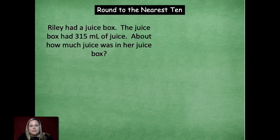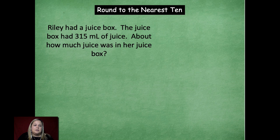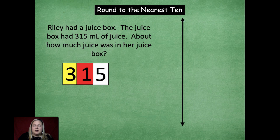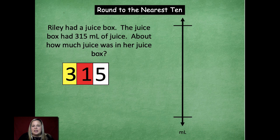Okay? So let's do another one. So Riley had a juice box. The juice box had three hundred fifteen milliliters of juice. About how much juice was in her juice box? So again, we have our three hundred fifteen. We're going to use our vertical number line. You have your starting point and your ending point. We are measuring in milliliters. So I labeled my vertical number line with the unit.